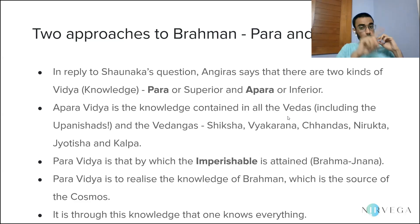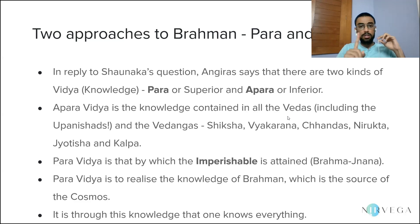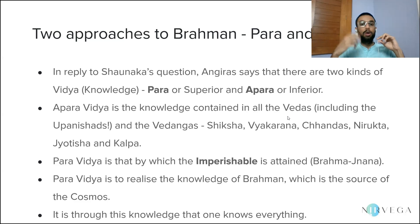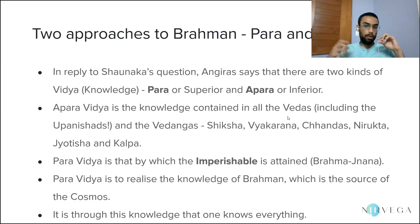He connects this to Shaunaka's original question: what is it by knowing which everything can be known? To make sense of this, let us take the example of ornaments made of gold. Let's say there is a bracelet, a necklace, and a ring — all made of gold. Based on their form, each one is different from the other.